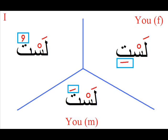For example, I can say Anna Lastu Musa, which means Anna — I'm — Lastu — not — Musa, which is a name. So Anna Lastu Musa means I am not Musa.